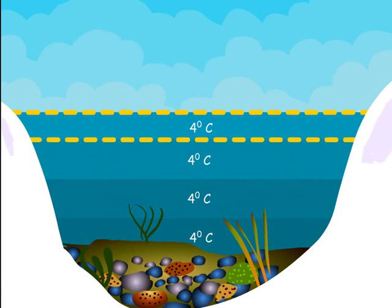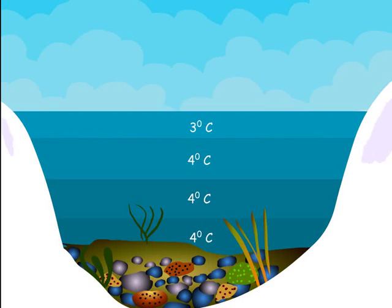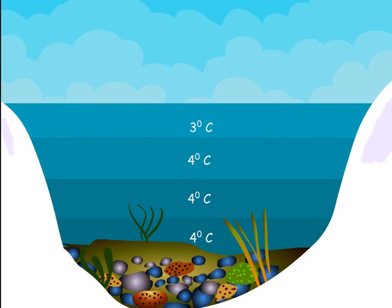Now, as the water at the surface cools below 4 degrees Celsius, it expands instead of contracting, and thus its density decreases. As a result, it becomes lighter than the rest of the water and remains on the surface of the lake.